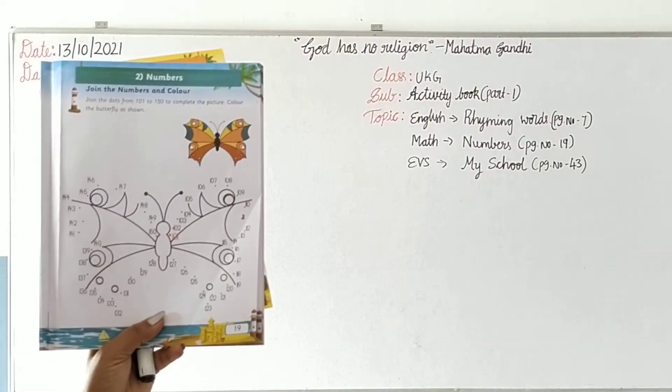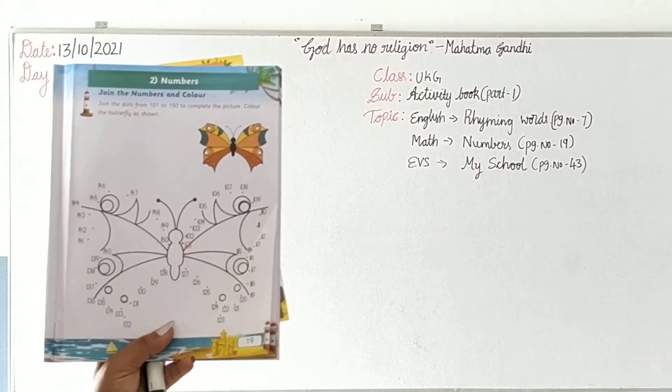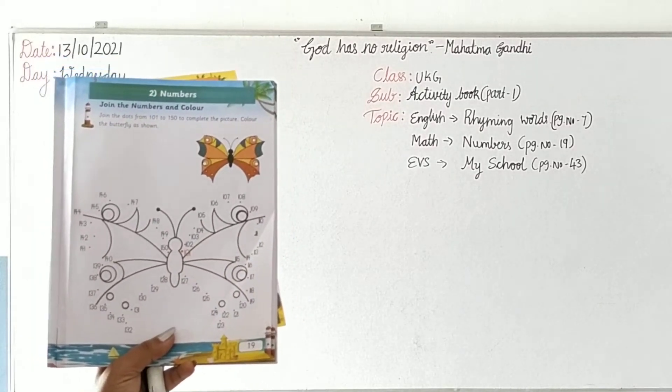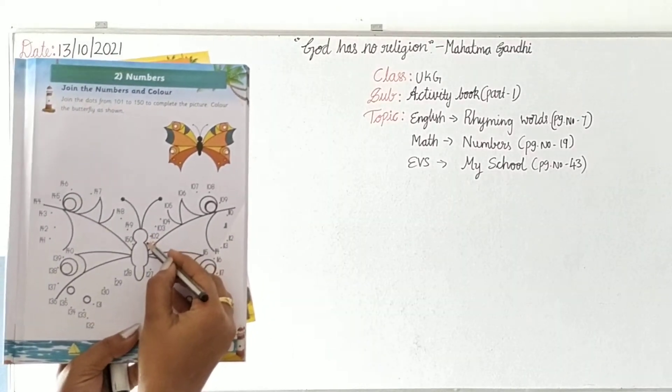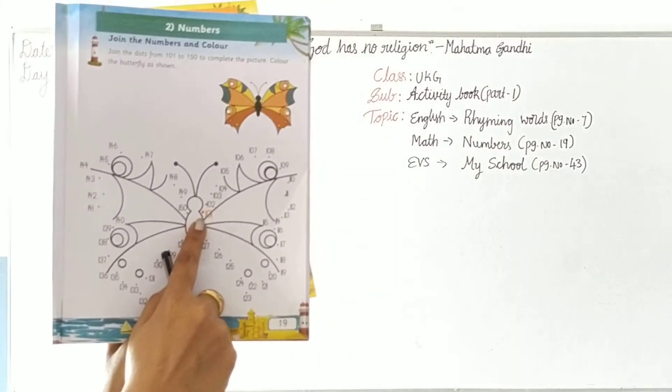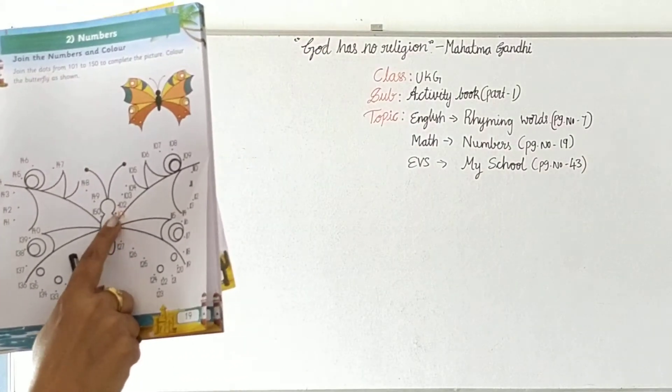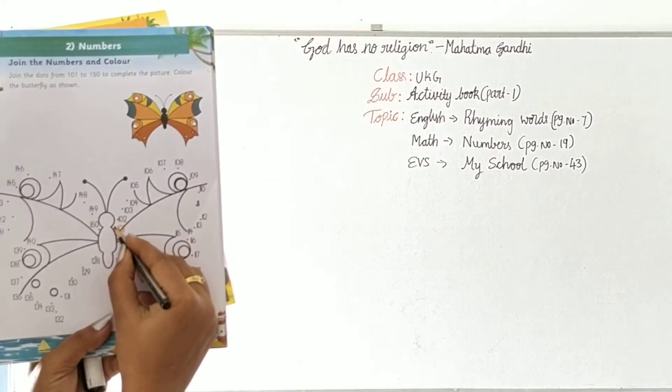Numbers - join the numbers and colour. Join the dots from 101 to 150. Complete the picture, colour the butterfly as shown. We have to join the dots first. Where should we start from? Hundred and one.